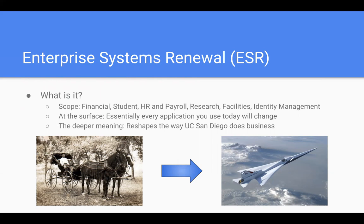That surface change leads to the deeper meaning, which is that we're reshaping the way UC San Diego does business. That's the whole gist of what Process Palooza is about — what Lean Six Sigma and all this process analysis is about: what happens in our workflow, where are the bottlenecks, how could this be streamlined to make our business processes more efficient? That's the essence of this.